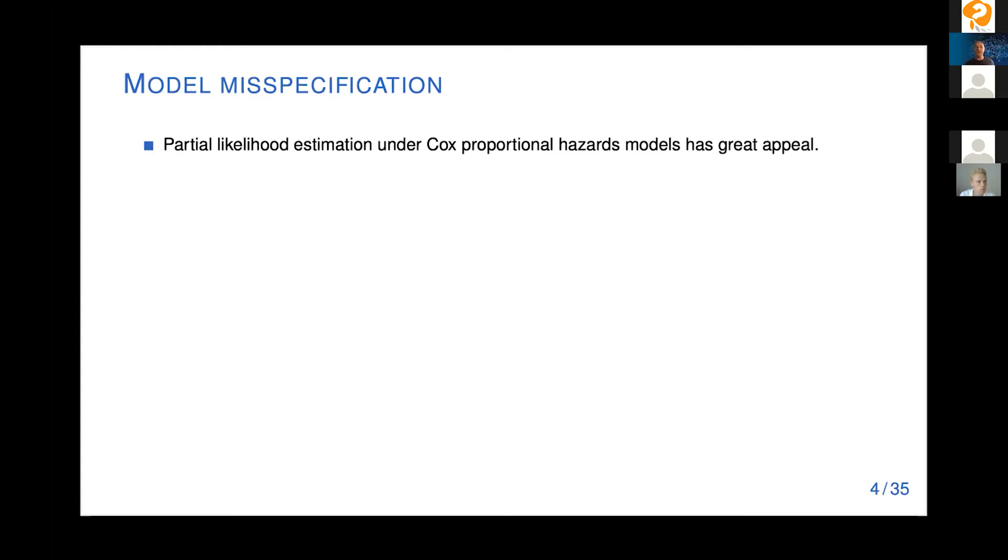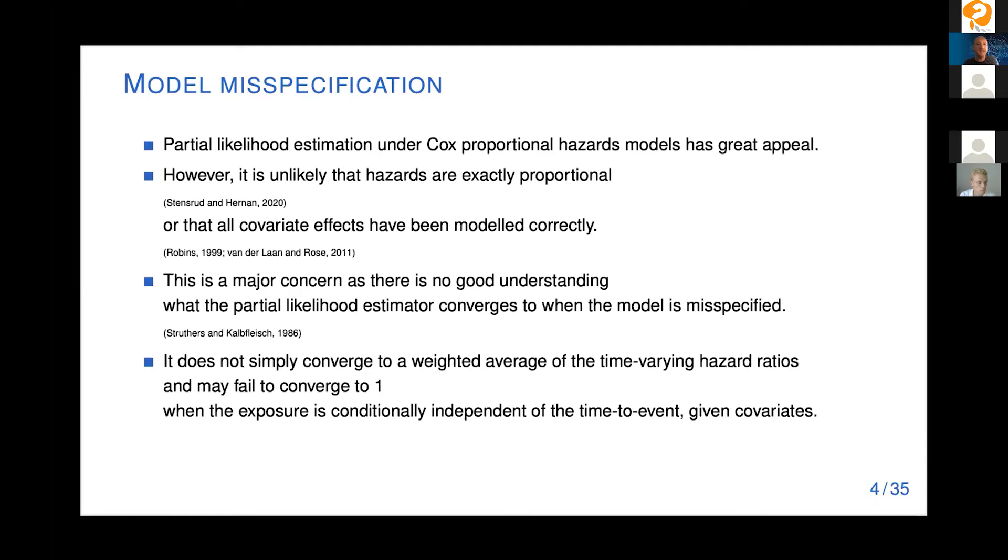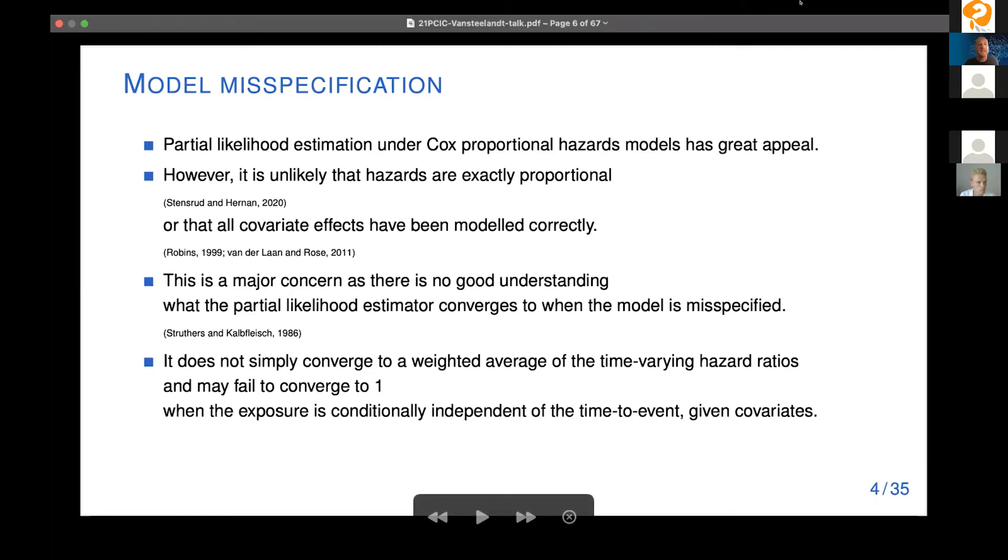The common way of estimating hazard ratios is using Cox regression, and that obviously has great appeal, but also its own deficiencies. It's unlikely that we will have perfect proportionality in terms of hazards, and it's perhaps even more unlikely that we'll be able to model all covariate effects successfully. And that is a major concern because we don't usually understand very well where the hazard ratio estimator is converging to when the model is misspecified. And for instance, if proportionality of hazards is not really quite true, then the partial likelihood estimator is not simply converging to a weighted average of time varying hazard ratios. And if we misspecified covariate effects, then even when exposure and time to event endpoint are independent given covariates, then the partial likelihood estimator may still not converge to one.